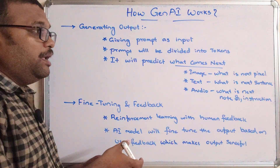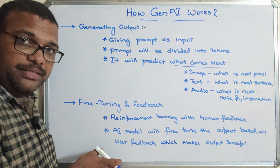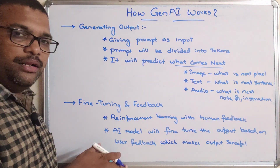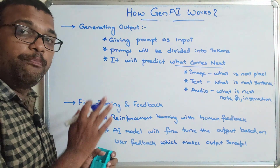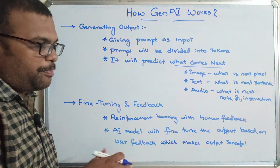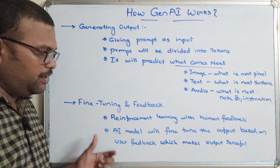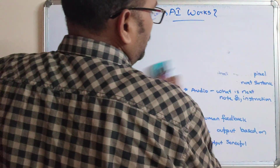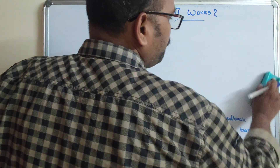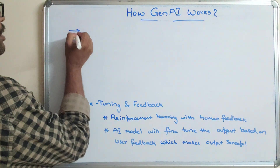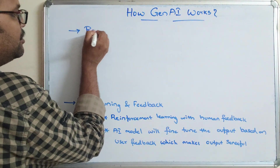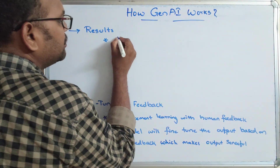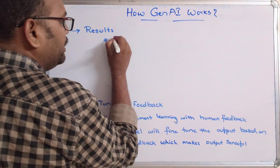Because in the second phase — build a model — the AI learned how to predict the next ones, it uses that to fine-tune the output. Finally, the last phase is results: after fine-tuning, it produces new content.